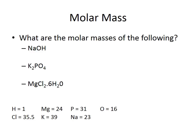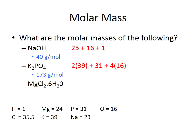On this slide we have worked examples. The first is sodium hydroxide (NaOH): one sodium at mass 23, one oxygen at 16, one hydrogen at 1 — adding up to a molar mass of 40 g/mol. Remember to always include the units. The second example is potassium phosphate: two potassiums at mass 39, one phosphate at 31, and four oxygens at 16 — giving a final value of 173 g/mol.